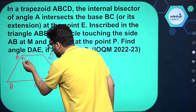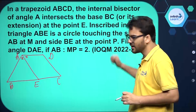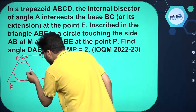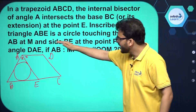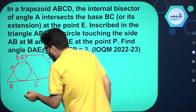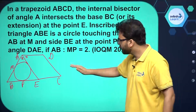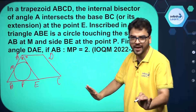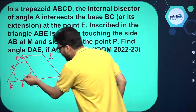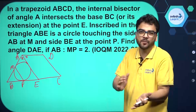Let's suppose this angle is x, so this bisected angle is also x. Now, inscribed in triangle ABE is a circle, touching side AB at M and side BE at point P. We have to find the value of angle DAE — basically the value of x — given that AB to MP equals 2.